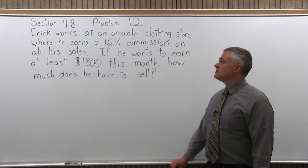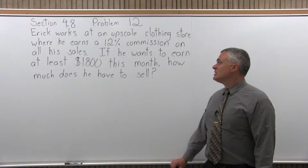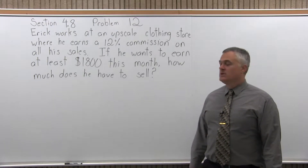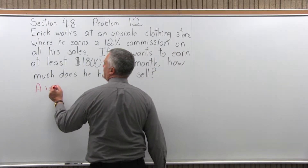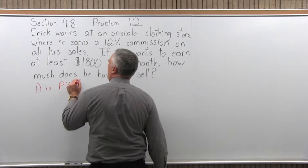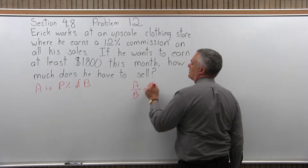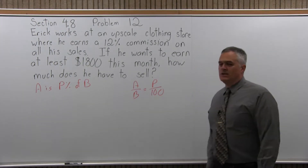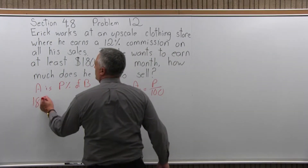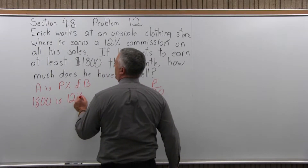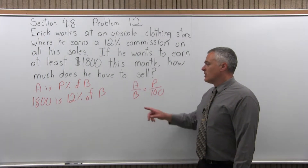It says, Eric works at an upscale clothing store where he earns a 12% commission on all his sales. If he wants to earn at least $1,800 this month, how much does he have to sell? I'd like to write this problem in the form A is P percent of B. $1,800 is the commission earned — $1,800 is 12% of what total amount of sales? We'll call that B. So: $1,800 is 12% of B.